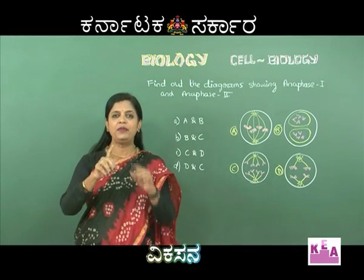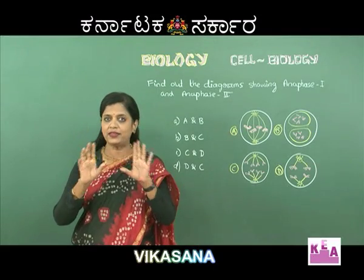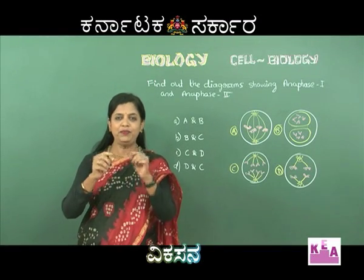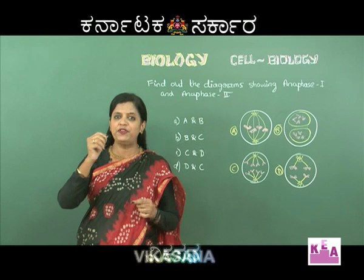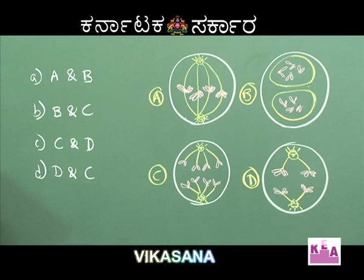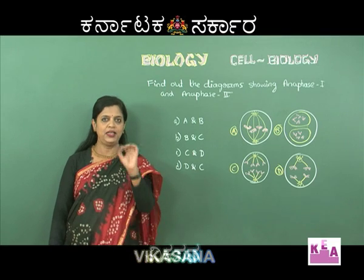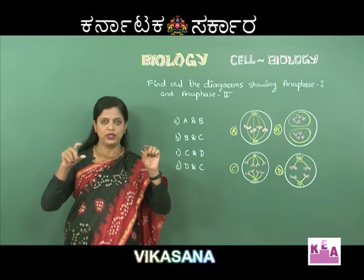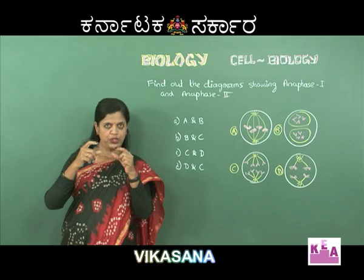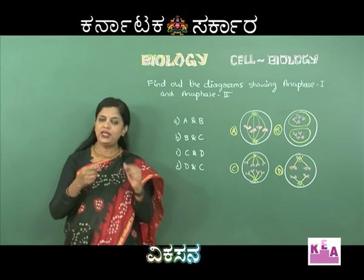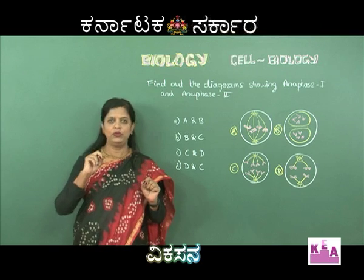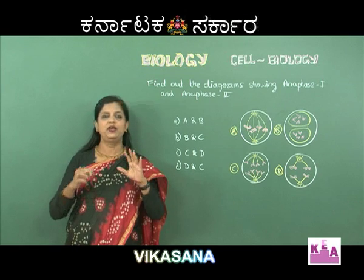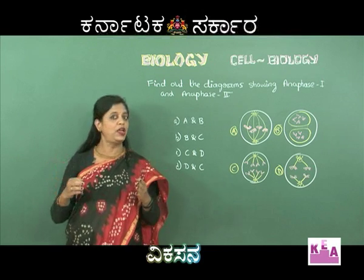If you understand the mitosis and meiosis division, you will be confident in answering. Cell division is the chapter where you have to concentrate most. When you learn the stages, observe the chromosome positions and their arrangements carefully or you will be confused. Mitosis is the cell division in which the chromosome number remains the same in daughter cells - it is called the Equational Cell Division, happening in almost all body cells.